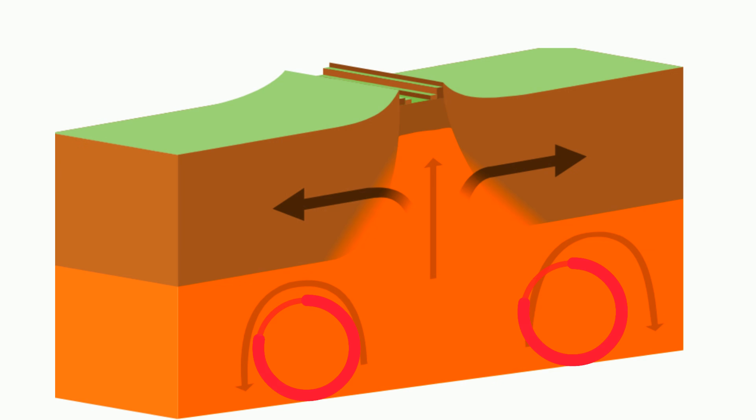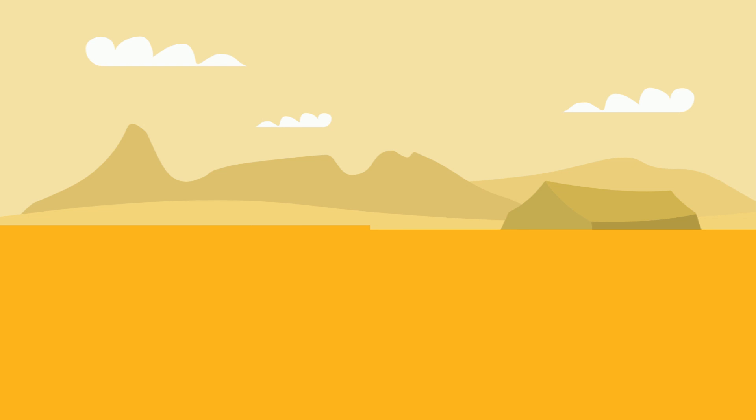Continental and continental divergent boundaries occur when two plates of continental lithosphere move away from one another. As the magma rises, new lithosphere is created.